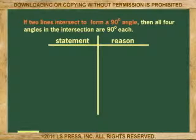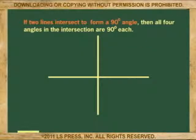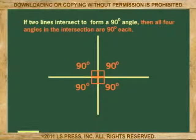This particular theorem says if two lines intersect to form a 90 degree angle, then all four angles in the intersection are 90 degrees each.